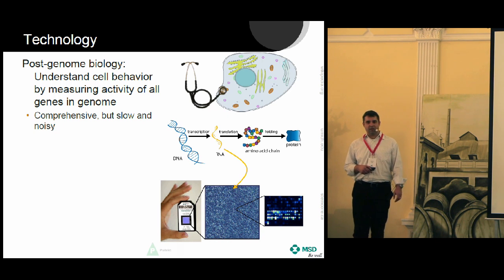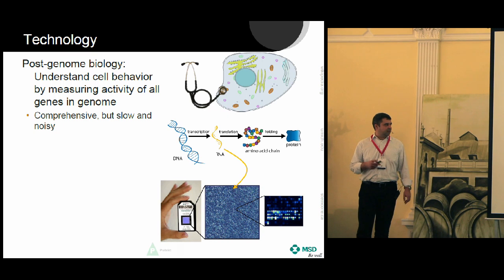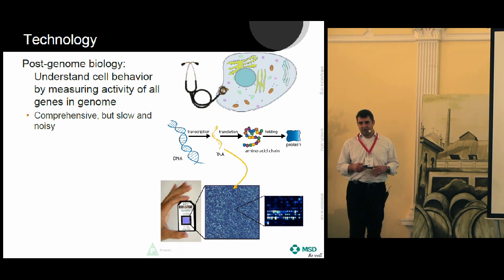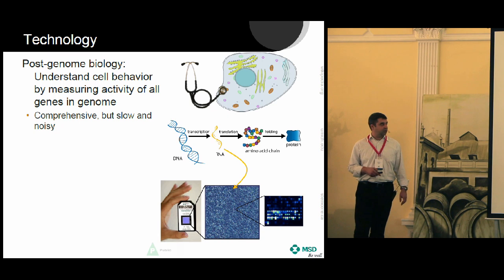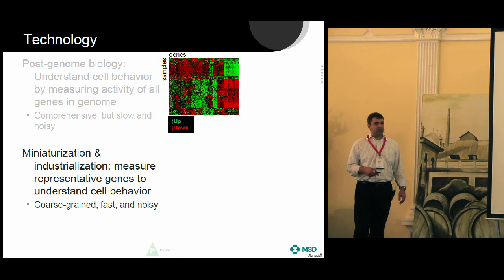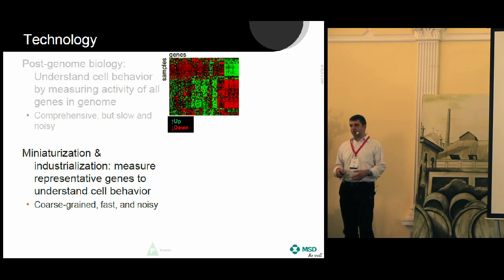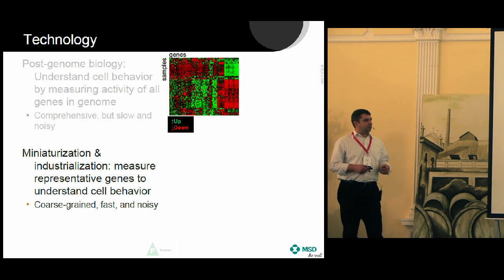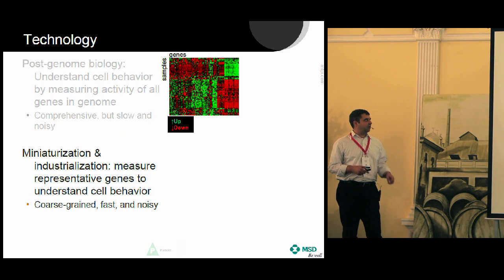The Luminex technology is 15 to 20 years old and allows you to look at the expression state of all the genes in the human genome. What has changed more recently is that this process has gotten miniaturized and industrialized, so now instead of looking at hundreds of samples in a year, we can look at hundreds of thousands.